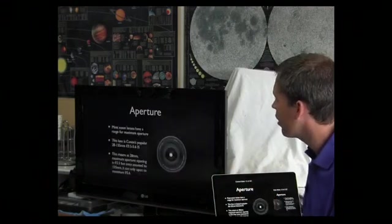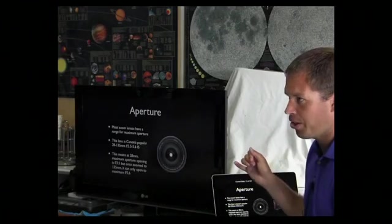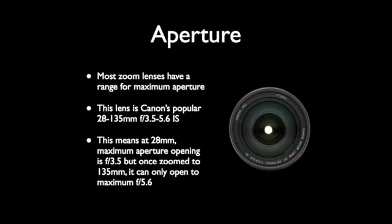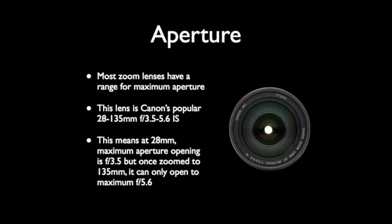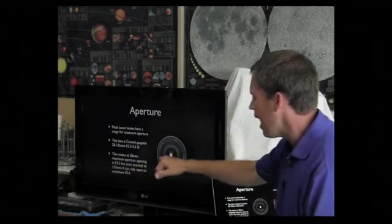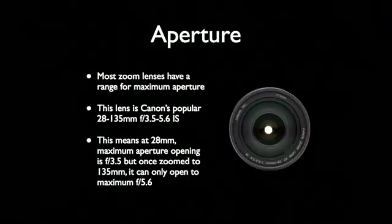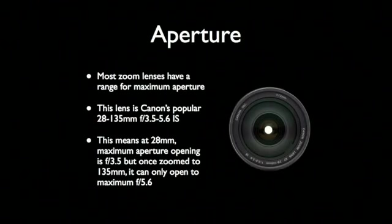Zoom lenses usually have a range for their aperture — a lot of people don't know this. Canon's popular 28 to 135 lens, for example: when you're at 28mm it's f3.5, but as you zoom in it actually closes down to f5.6.